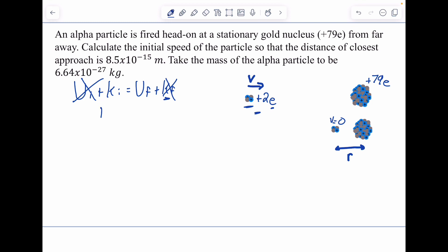So the initial kinetic energy is one-half mv squared for the alpha particle, and that's going to be equal to k times the charge of the alpha particle times the charge of the gold nucleus. They're both positive, so there's positive potential energy over r.